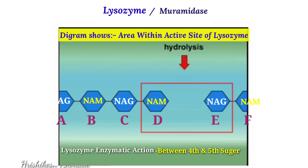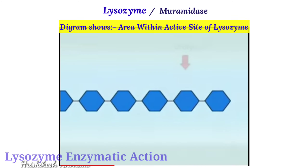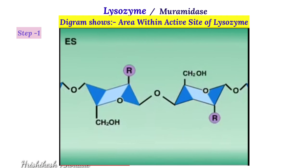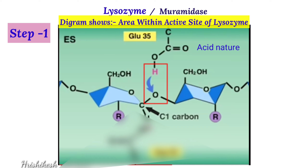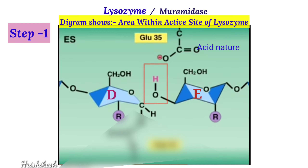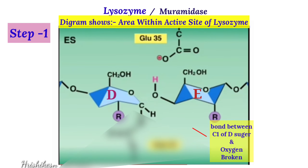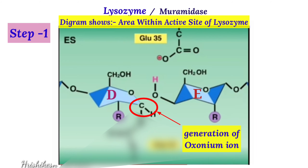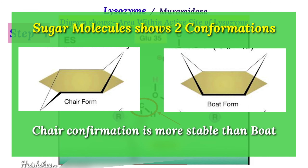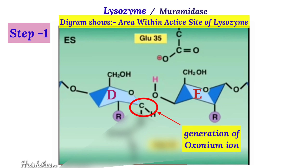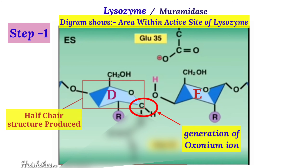Remember: the bond between the fourth and fifth sugar molecules (D and E) is the one that breaks. Questions are often based on this. The lysozyme enzymatic action has two steps. In step one, glutamic acid 35 — which is acidic in nature — transfers its proton to the oxygen present between the D and E sugar molecules. By doing so, the bond between C1 and oxygen gets broken, resulting in the generation of an oxonium ion at the C1 carbon of sugar D.